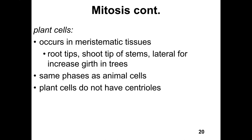Plant cells also undergo mitosis. This occurs in tissue known as meristematic tissue. You can find meristematic tissue in root tips and shoot tips of stems, and it also occurs laterally for girth of trees. So mitosis occurs in plant cells but only in tissue known as meristematic tissue.